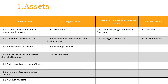1.2. Tangible assets: 1.2.1 Inventories; 1.2.2 Allowance for obsolescence and decline in value; 1.2.3 Breeding livestock; 1.2.4 Capital assets. 1.3. Deferred charges and intangible assets: 1.3.1 Deferred charges and prepaid expenses; 1.3.2 Intangible assets net. 1.4. Ordered assets: 1.4.1 Pensions; 1.4.2 All-order assets.